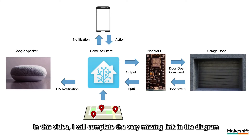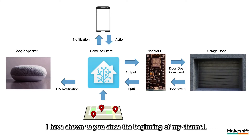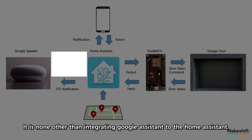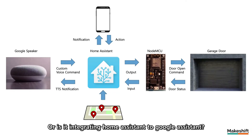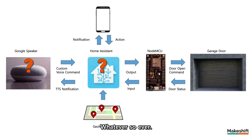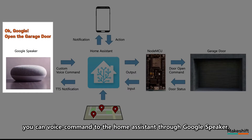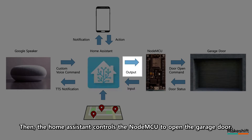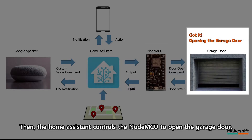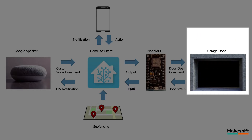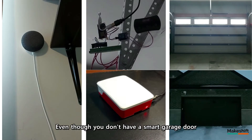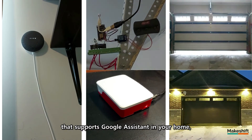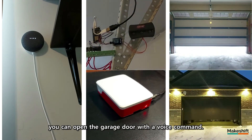In this video, I will complete the very missing link in the diagram I have shown since the beginning of my channel. It is none other than integrating Google Assistant to Home Assistant. If you follow this step, you can voice command the Home Assistant through a Google Speaker, and the Home Assistant controls the NodeMCU to open the garage door. Even though you don't have a smart garage door that supports Google Assistant, you can open the garage door with a voice command.